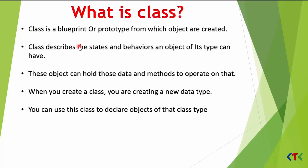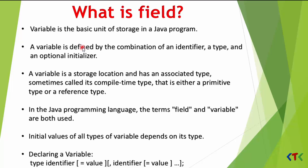What is a field? A field is also called a variable in Java. A variable is the basic unit of storage in Java. A variable is defined by the combination of an identifier — which is the name of that variable — and a type, which can be a primitive type or a reference type. I will upload another video where I will explain the data types available in Java, and also an optional initializer, which is the initial value of that variable.